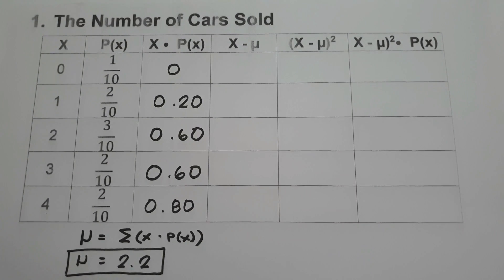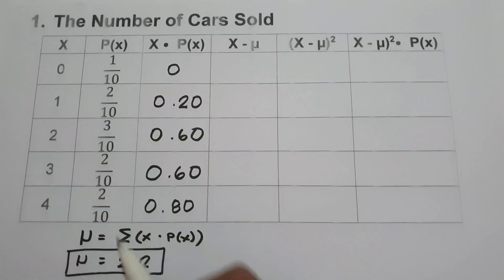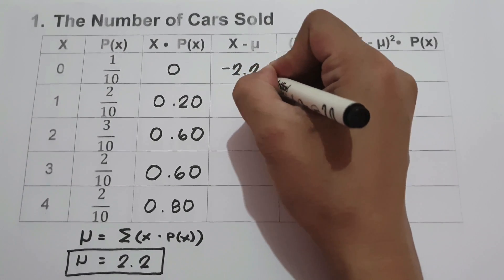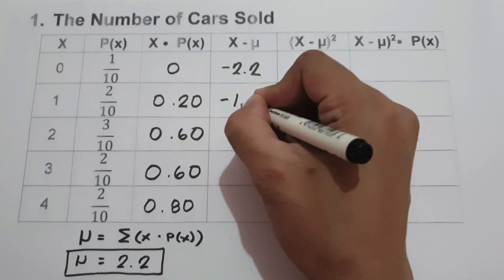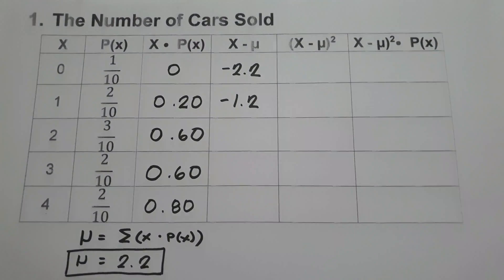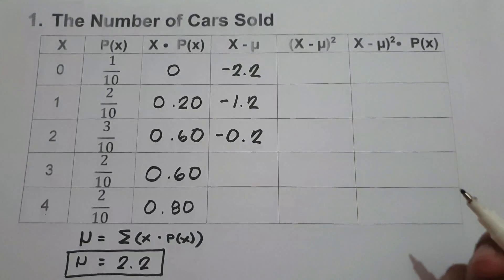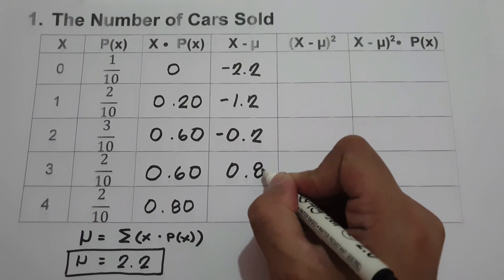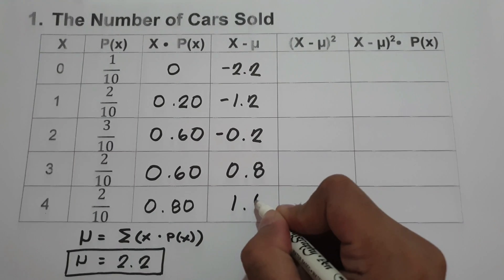The next step is to subtract the mean from each value of the random variable x. That gives us: 0 minus 2.2 = negative 2.2; 1 minus 2.2 = negative 1.2; 2 minus 2.2 = negative 0.2; 3 minus 2.2 = 0.8; and 4 minus 2.2 = 1.8.